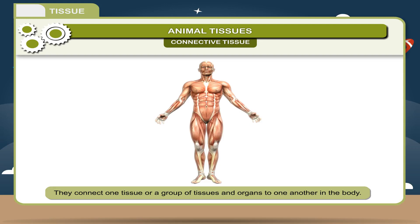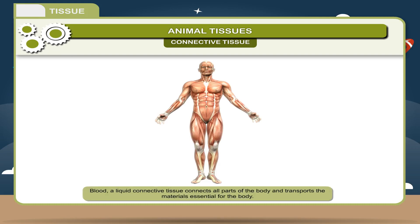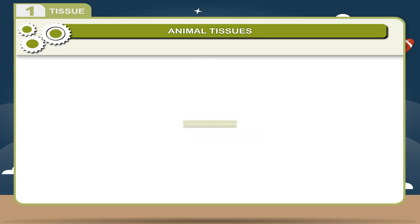Functions: 1. They connect one tissue or a group of tissues and organs to one another in the body. 2. They provide support to the body and body organs. 3. Blood, a liquid connective tissue, connects all parts of the body and transports the materials essential for the body.